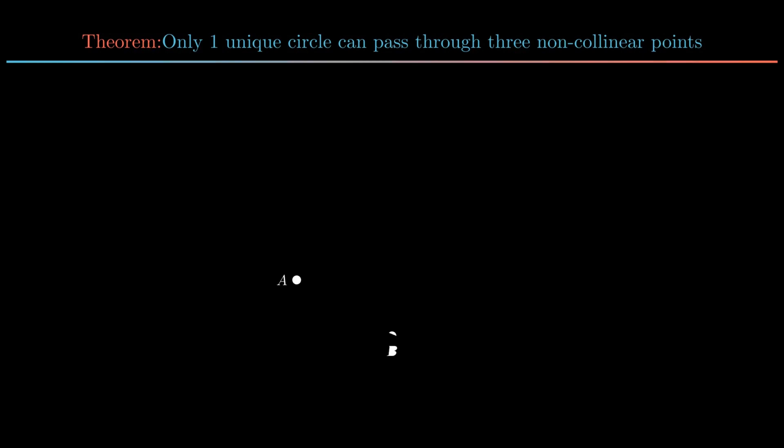Consider ABC as three non-collinear points. Join point A and B. Now construct perpendicular bisector of AB.